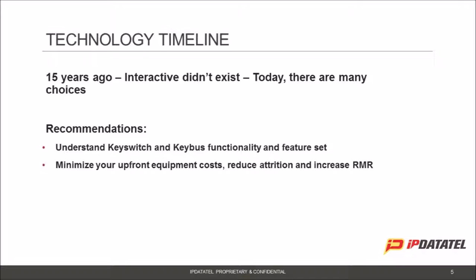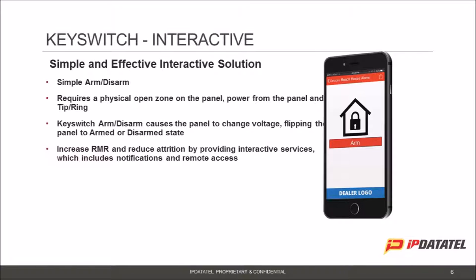We want to help you minimize your upfront costs and reduce attrition while increasing your RMR. KeySwitch is a simple and effective interactive solution with low upfront costs. This device not only sends signals to the central station from the security system and provides notifications to the end user, but it also allows the end user to arm and disarm the system through KeySwitch functionality.